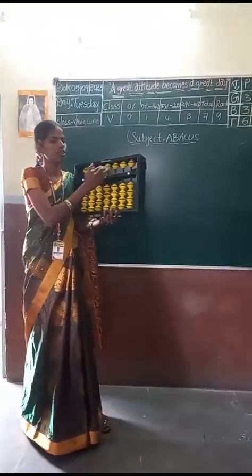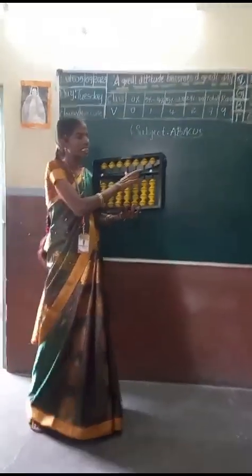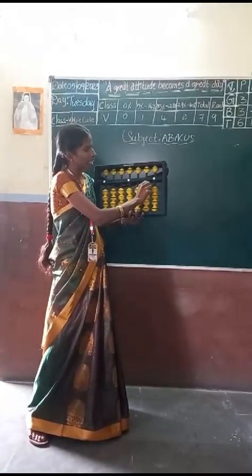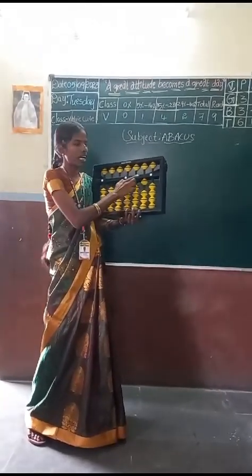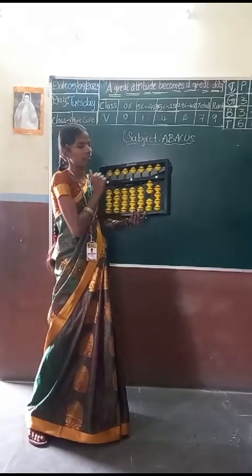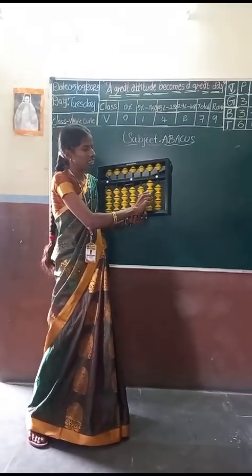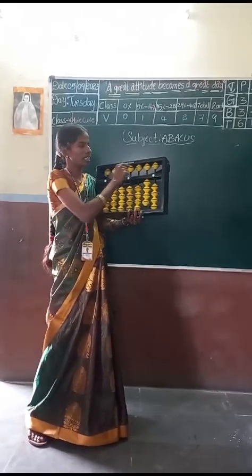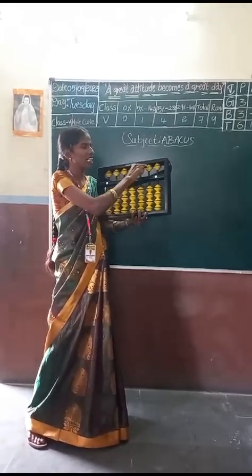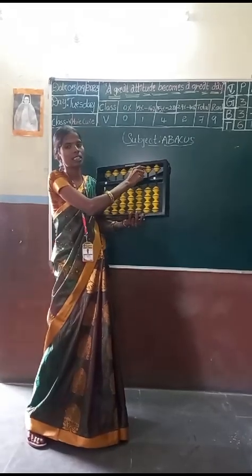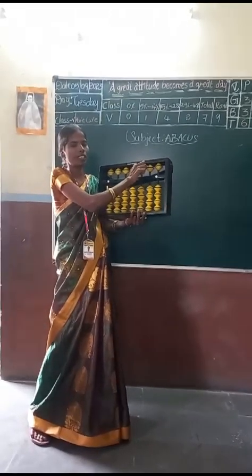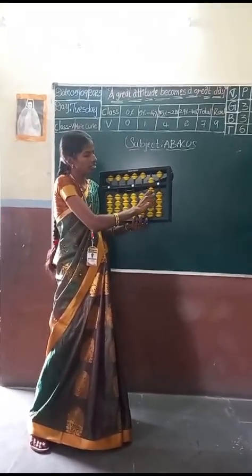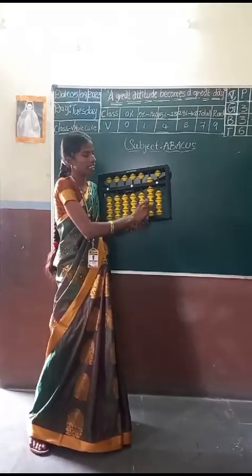Clear the tool. Now it comes to 10 space. Same like 1 space, but if we touch 1 lower bead, the value is 10. Again, the value is 20, 30, 40. Same like that, upper bead value here is 50. In 10 space, the value is 50. So: 50, 60, 70, 80, 90.